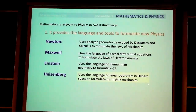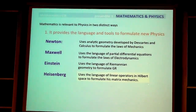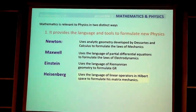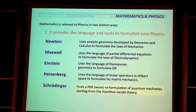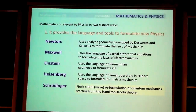It goes on. Heisenberg uses the language of matrices to formulate his matrix mechanics. Immediately after, there were many mathematicians who gave the proper language and formalism of quantum mechanics. And then Schrödinger himself used the PDE reformulation of quantum mechanics, which started from Hamilton and Jacobi's theory — something that mathematicians like Hamilton and Jacobi played a very fundamental role in.